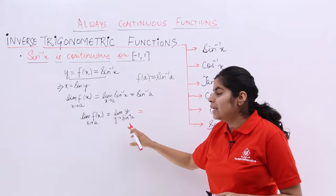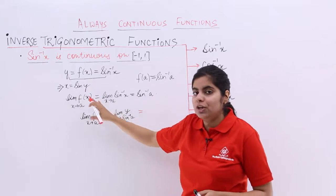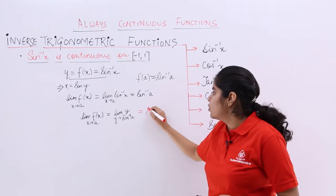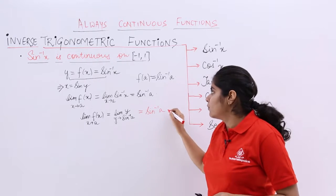so what happens in the initial and last steps? Initial steps were here. The last steps means you have to just substitute. So, it becomes sine inverse a.